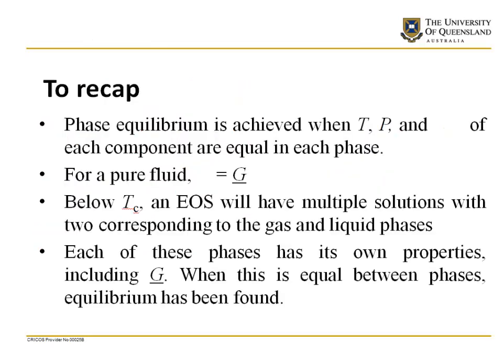To recap: phase equilibrium is achieved when temperature, pressure, and the partial Gibbs free energy of each component are equal in each phase. For a pure fluid, that partial Gibbs free energy is equal to the molar Gibbs free energy. Below the critical temperature, an equation of state will have multiple solutions, and two of those solutions will correspond to the gas phase and the liquid phase. Because we've got two solutions, each phase will have its own properties including the Gibbs free energy, and when these are equal we've found the point of phase equilibrium.